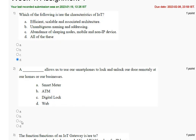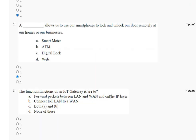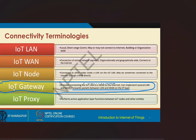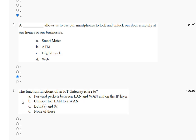Question three: which of the following are functions of an IoT gateway? First, forward packets between LAN and WAN on the IP layer; second, connect IoT LAN to WAN; third, both A and B; fourth, none of the above. The IoT gateway forwards packets between LAN and WAN on the IP layer and acts as a router connecting the IoT LAN to the internet. The correct answer is option C, both A and B.